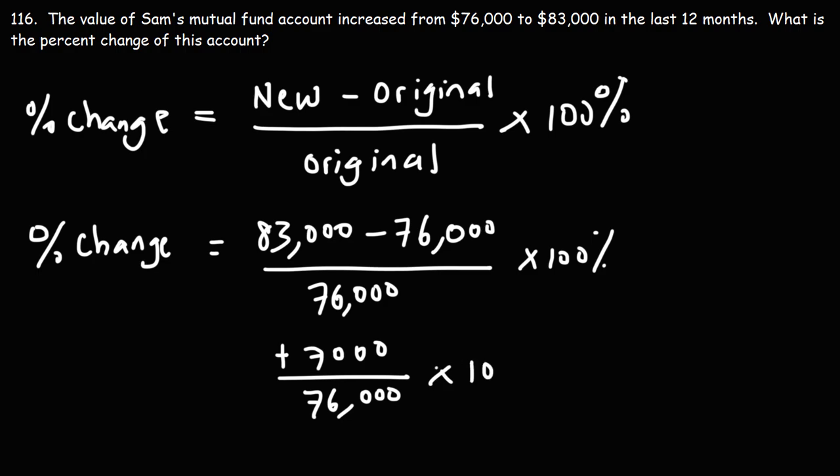and then multiply that by 100%. So 7,000 divided by 76,000 times 100%, that's 9.210526.